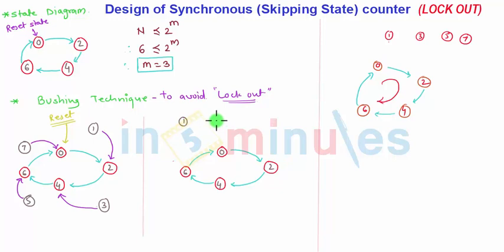Else, what you can do is all the invalid states, that is state number 1, 3, 5, and 7, you can take all these states and put them into the reset condition. So these are the two bushing techniques you can use. Means what? If the normal structure is left or the normal route 0, 2, 4, 6 is not followed by the counter due to some designing issues and circuit issues...